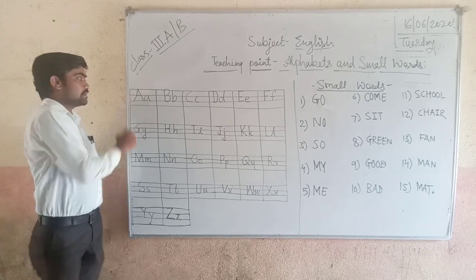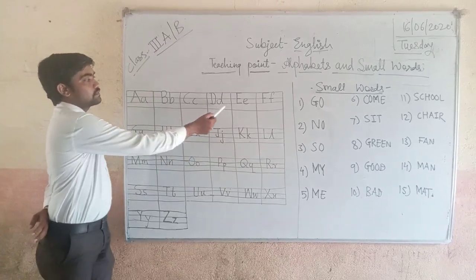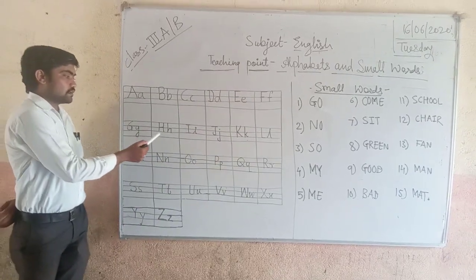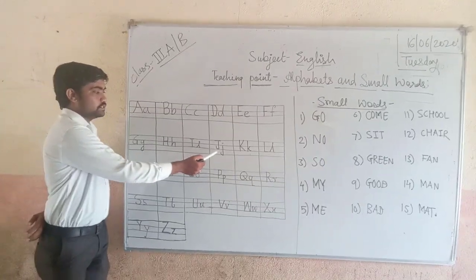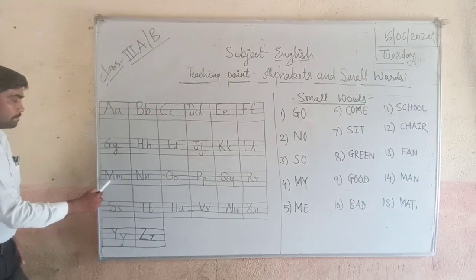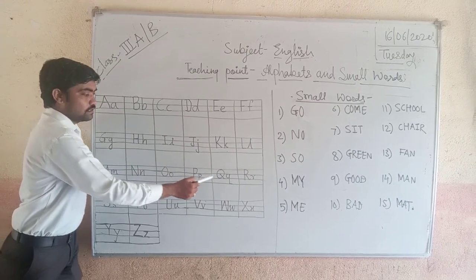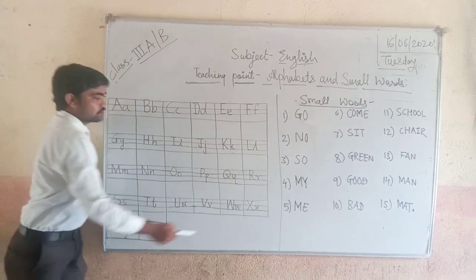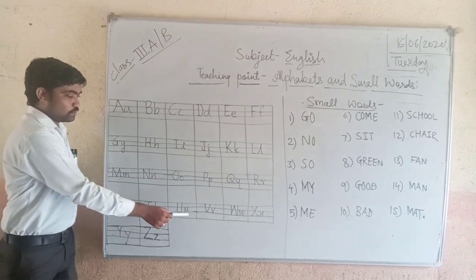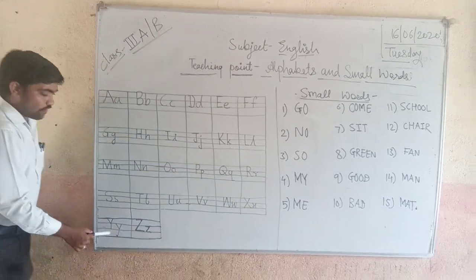A, this one is A. B, C, D, E, F, G, H, I, J, K, L, M, N, O, P, Q, R, S, T, U, V, W, X, Y, Z.